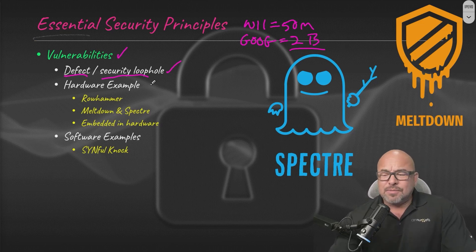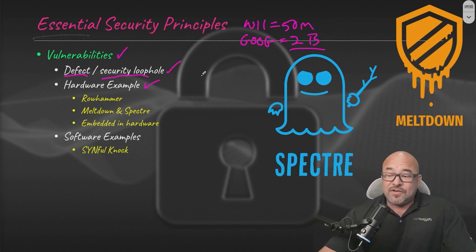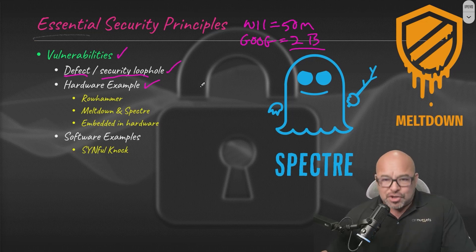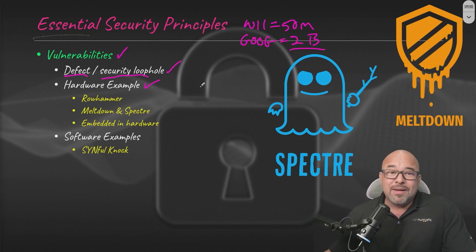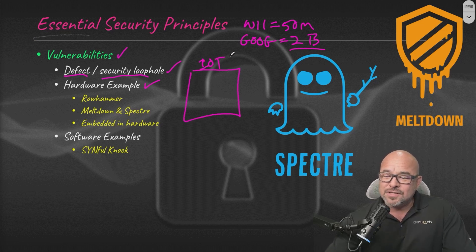Let's take a look at some hardware examples. Yes, vulnerabilities exist on hardware. Why is that? If you take a look at it, you'll have embedded circuits on hardware that a programmer has written something for. A good example would be an Internet of Things (IoT) device.